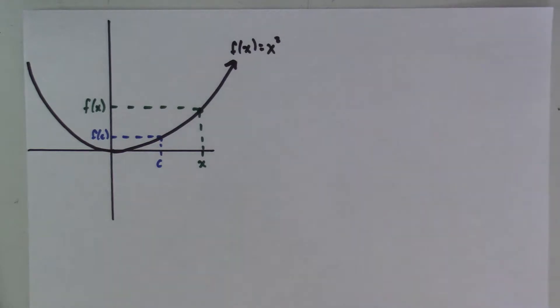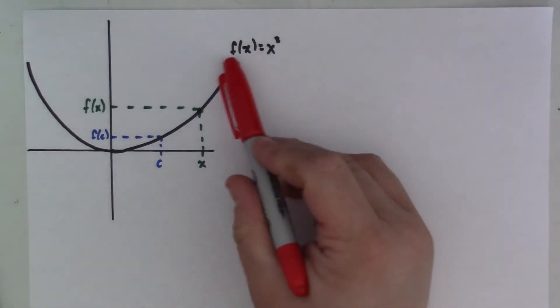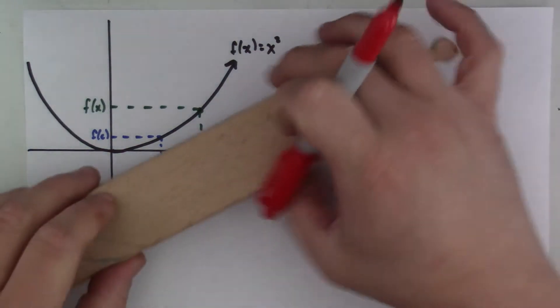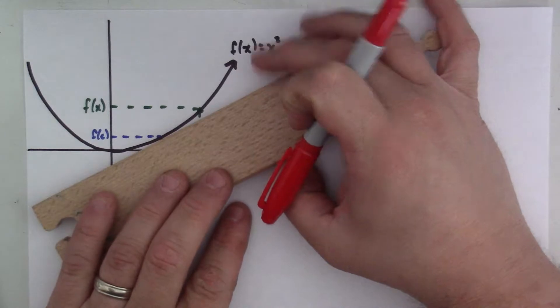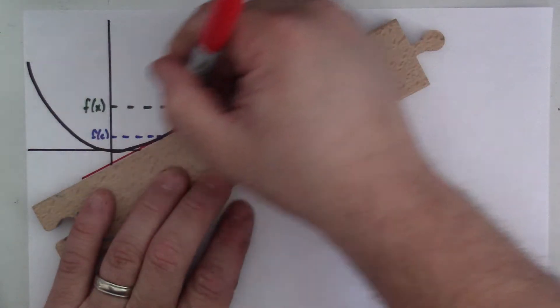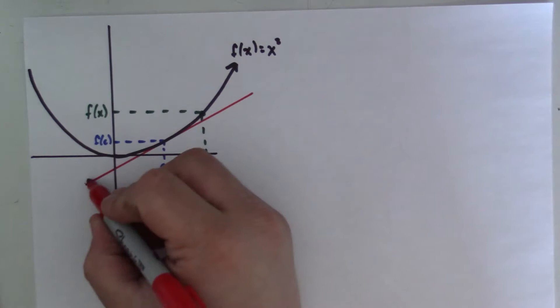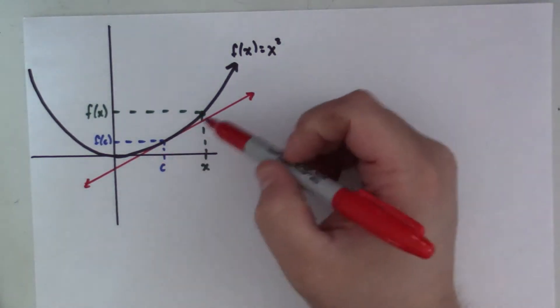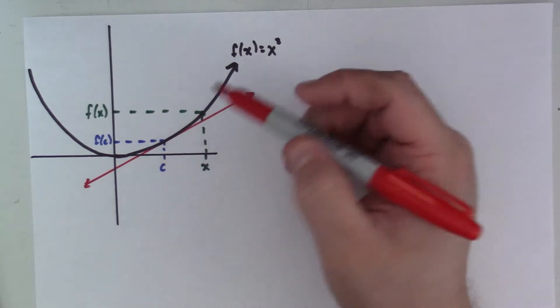We're going to focus this video exclusively on the function f of x equals x squared, so traditional parabola centered at the origin. And our idea is that for some arbitrary point c, I'm not saying what c is, c could be any value of x, I want to find out in general what is the slope of the tangent line at c.